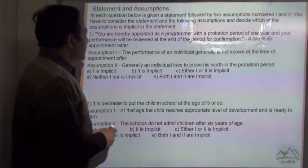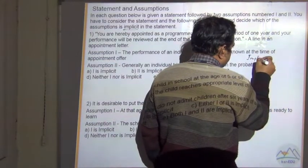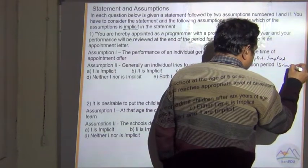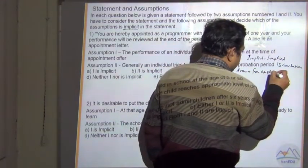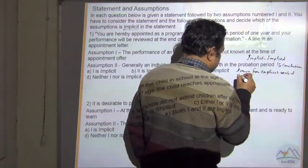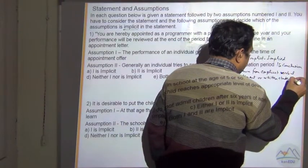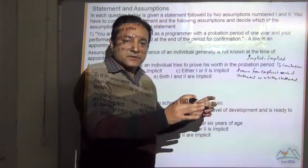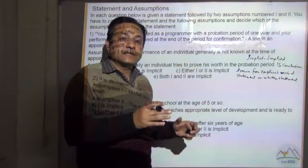So what is implicit? Implicit means implied. Implied means the conclusion drawn from an explicit verbal or written statement. Explicit means it is specifically told or written that you have to do this — so this is explicit.